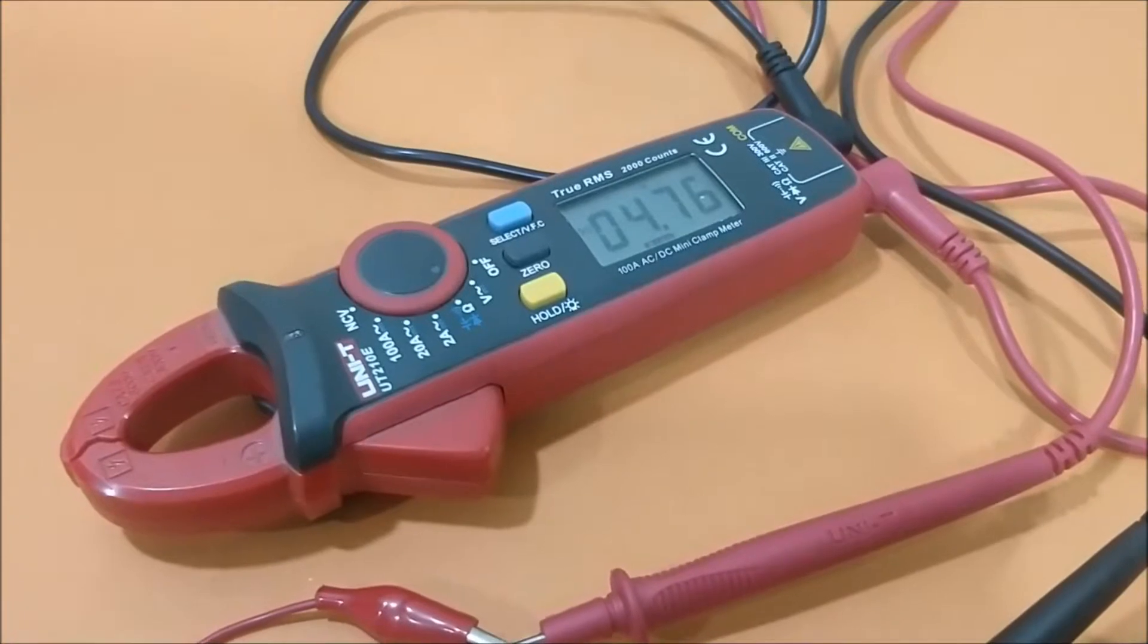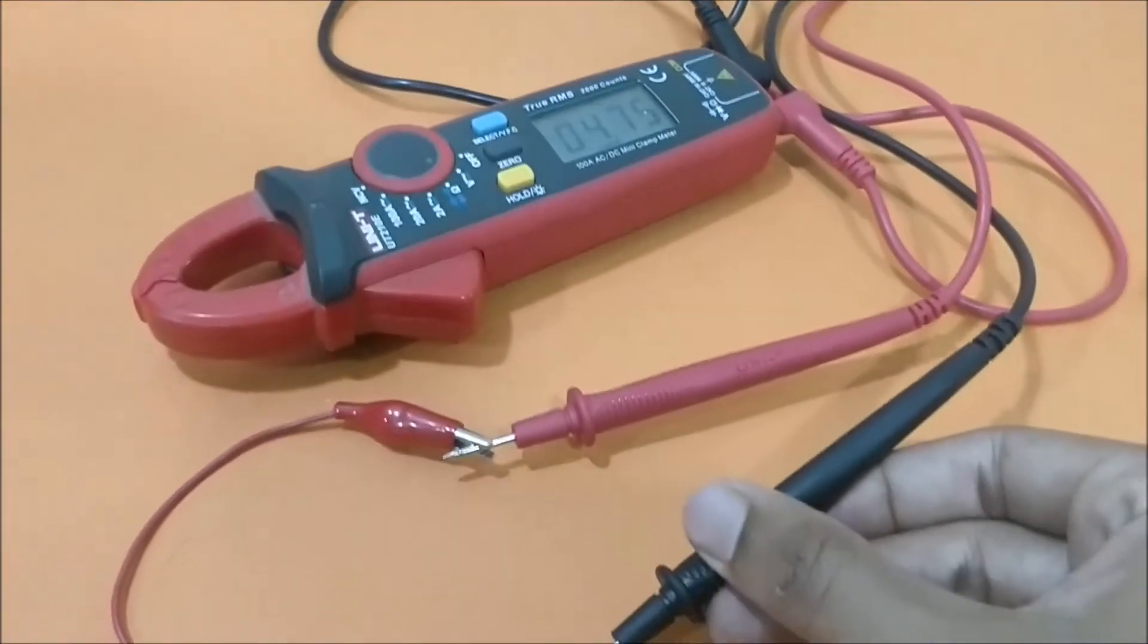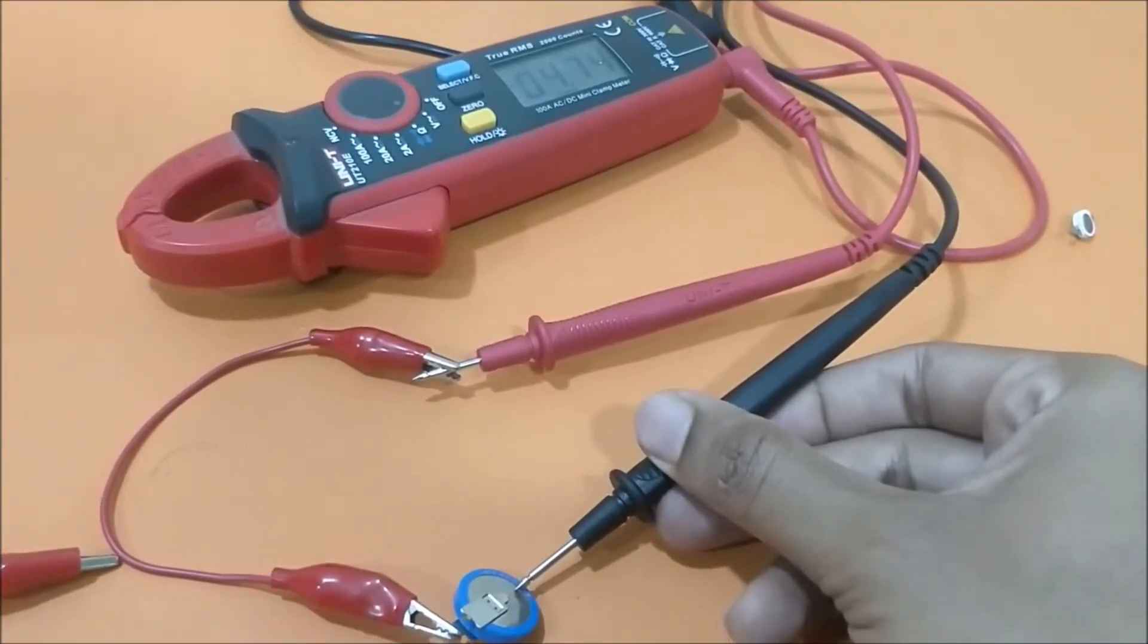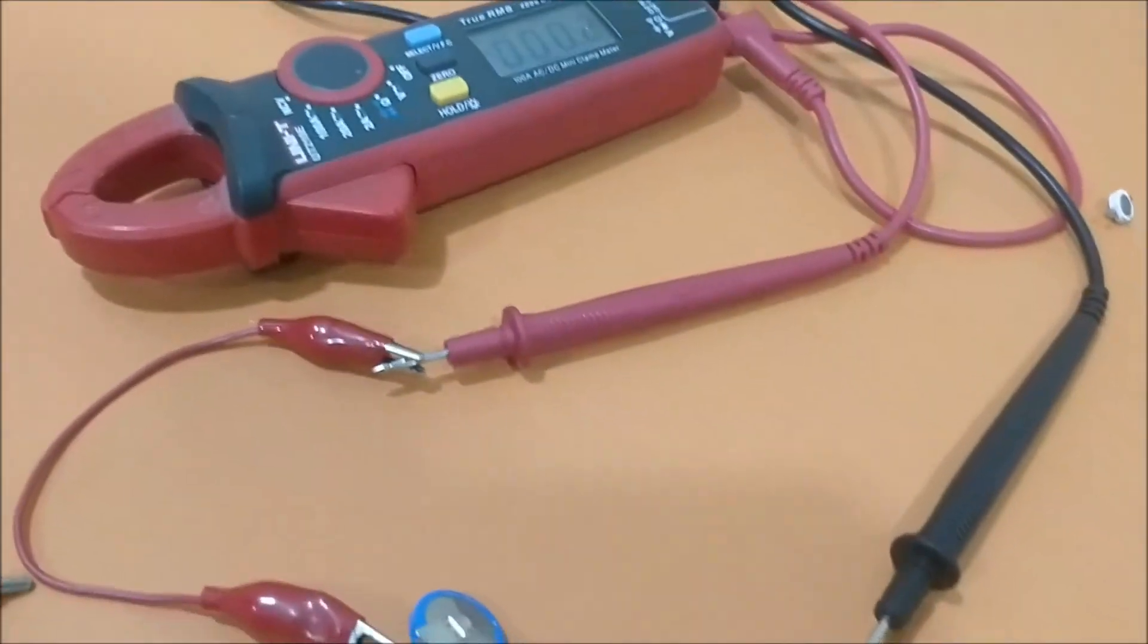So as you can see, we charged it up to 4.8 volts, but I just removed it and connected it to a multimeter and it has become 4.75 already, and 4.74 already. So the self-discharge problem is there with super capacitors.